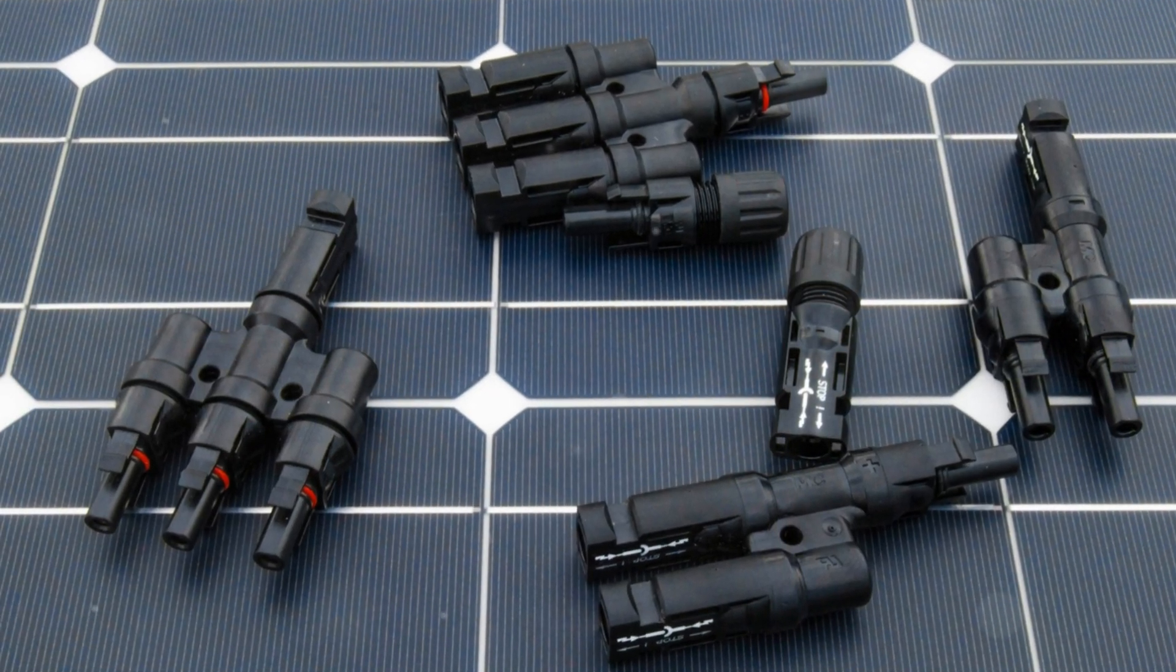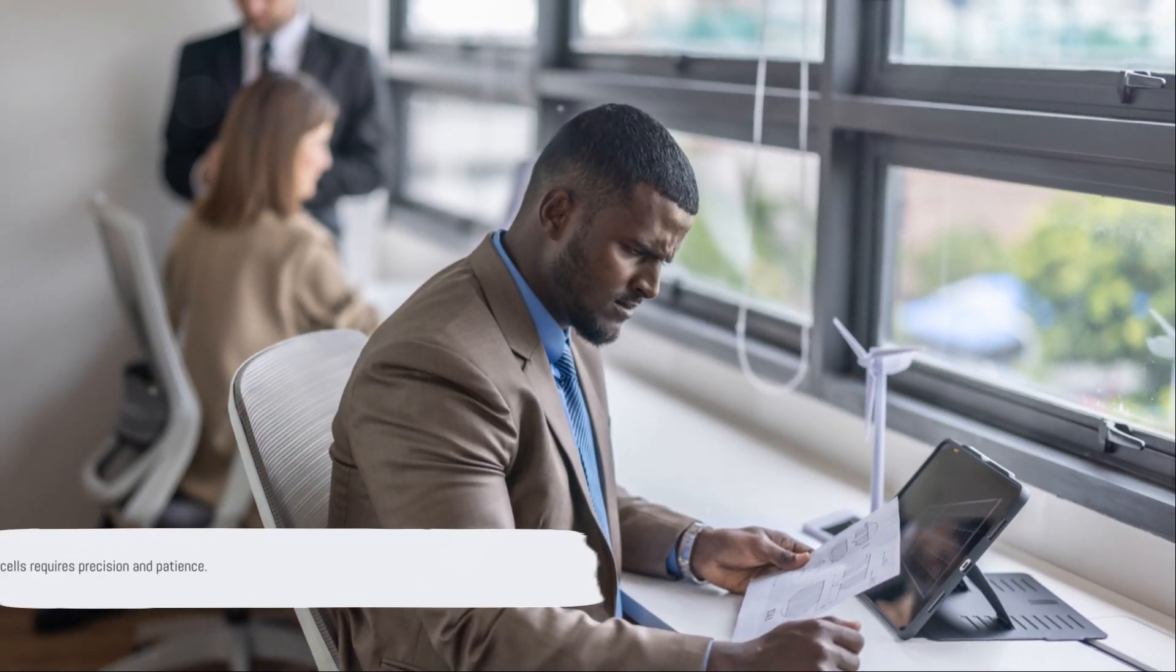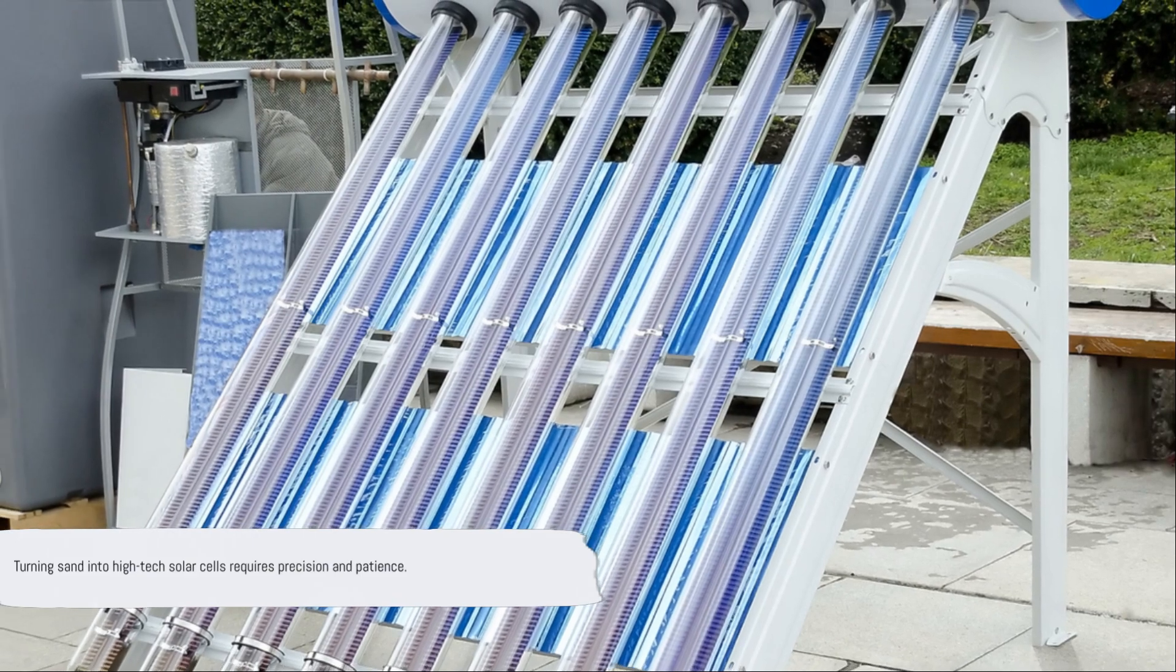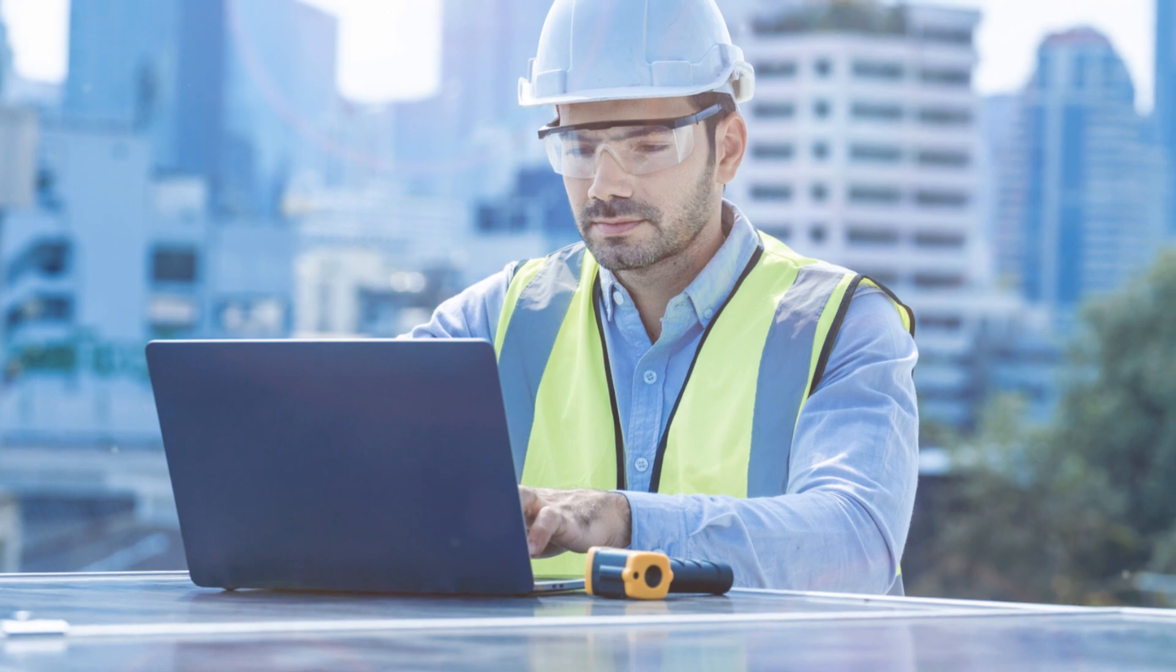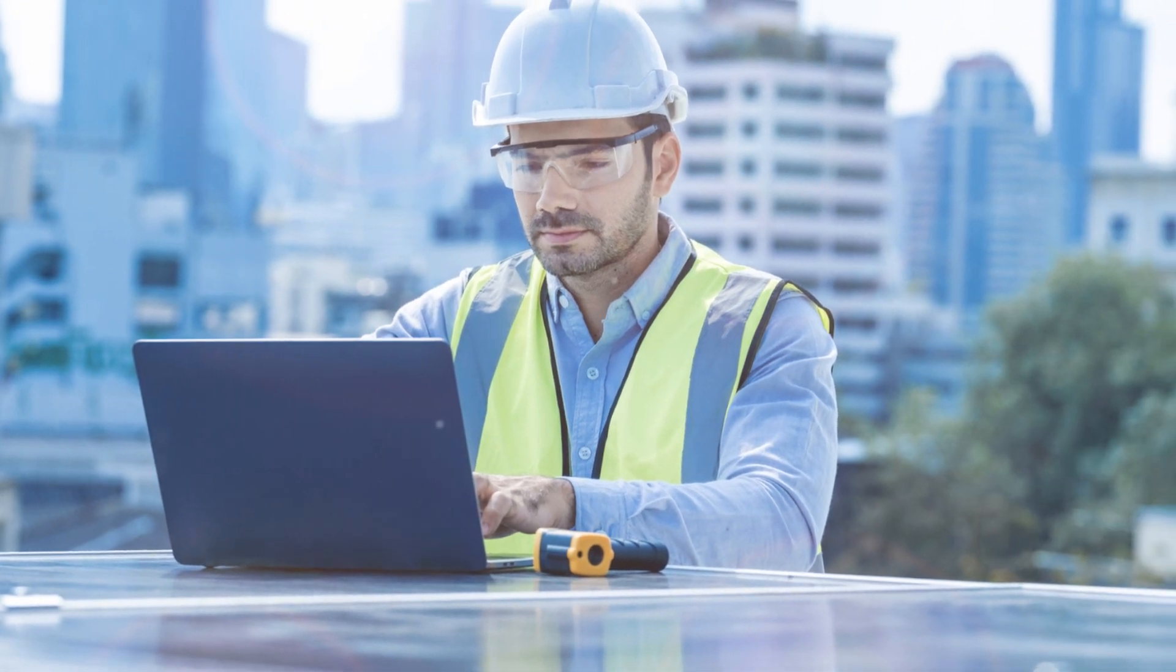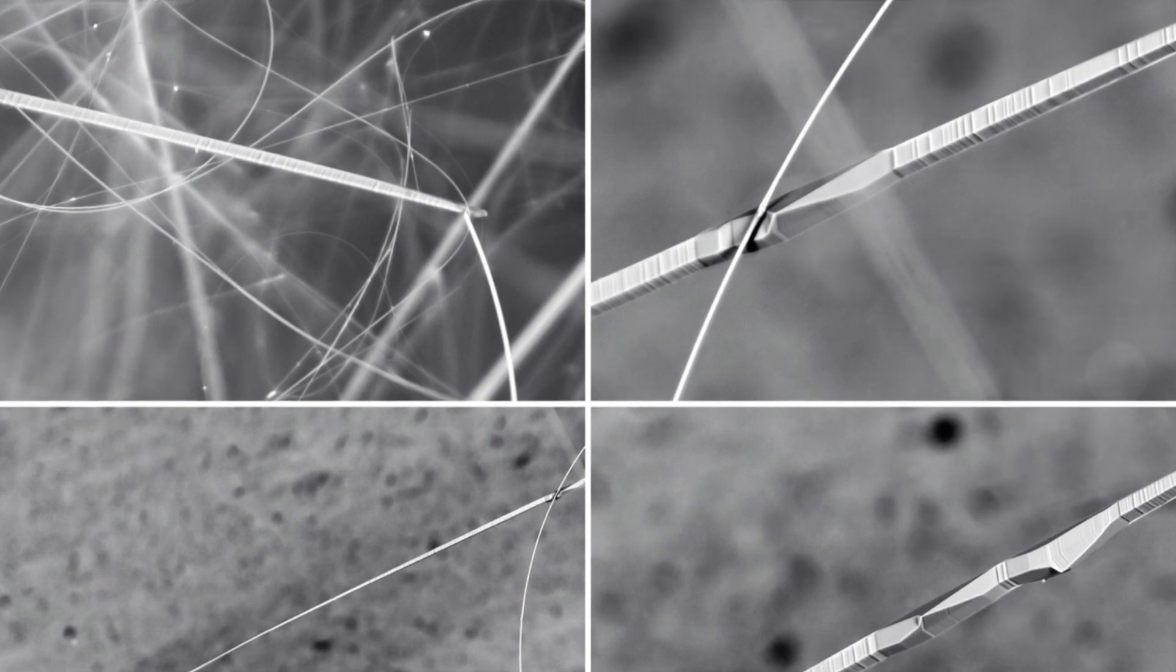Each wafer is a thin slice of crystalline silicon, ready to be transformed into a solar cell. This is a testament to our ability to manipulate materials at a microscopic level, turning common sand into a high-tech device that can harness the power of the sun. With our wafers ready, we can now begin the process of turning them into solar cells.